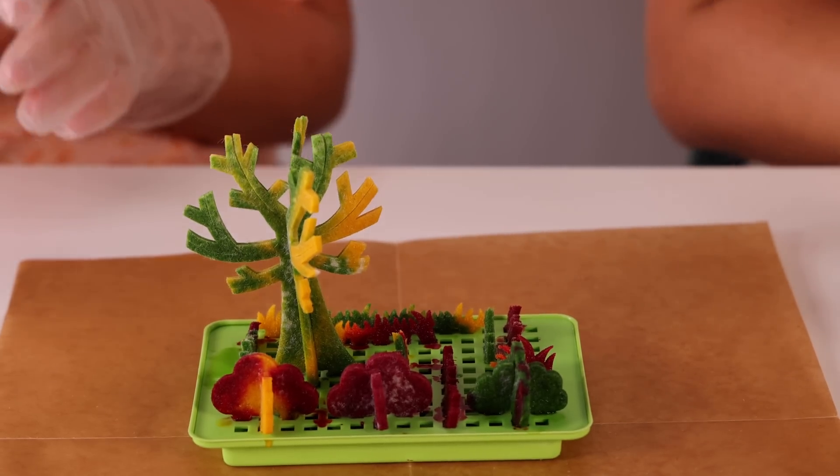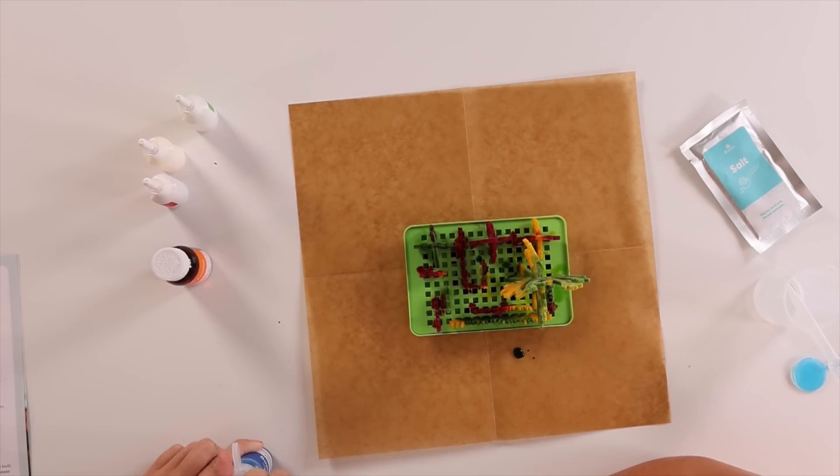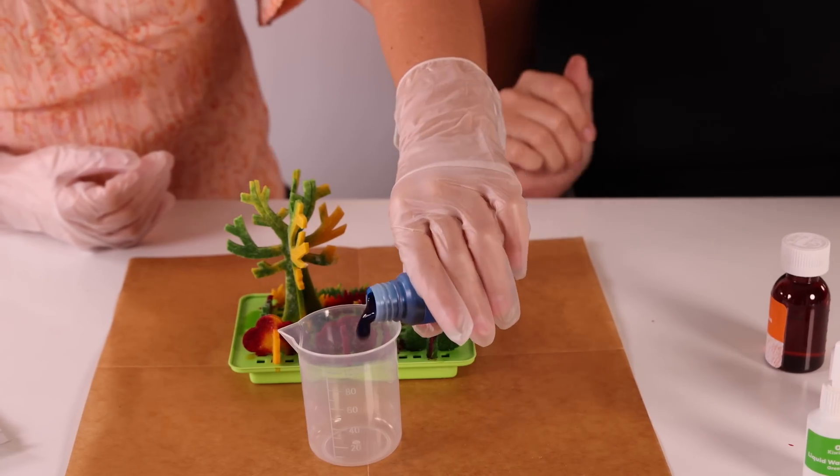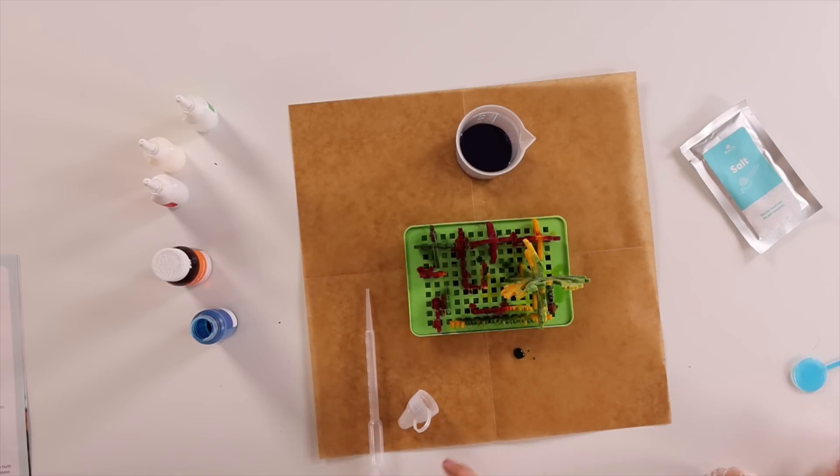Next step is, with our gloves on, twist the cap off of the bluing bottle and remove the seal. We're going to pour all of the bluing into the beaker. And now we're going to ask a grown-up to help twist the cap off the ammonia bottle and pour the solution in.